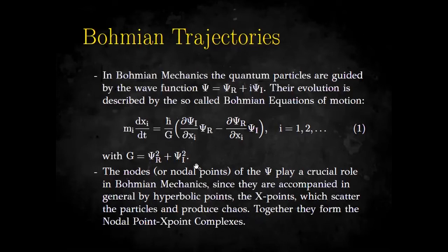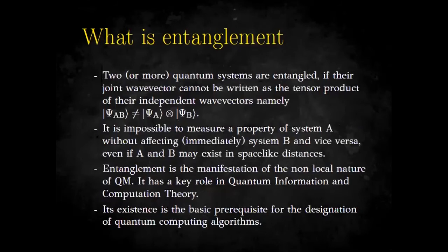According to the nodal point x-point complex framework, whenever a quantum particle comes close to a nodal point of the wave function, it gets scattered and deflected by a hyperbolic point — the so-called x-point — which is always close to every given nodal point. It has a special property: it is a stagnant point in the frame of reference of the moving nodal point. We will further explain the nodal point x-point complex mechanism in subsequent pages.